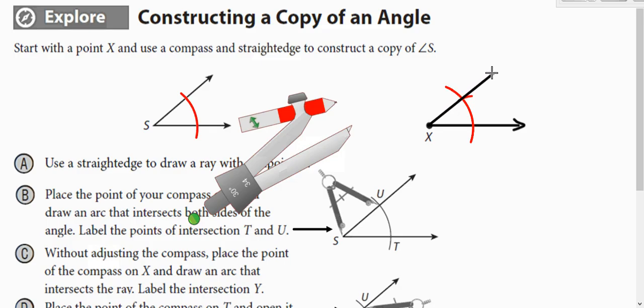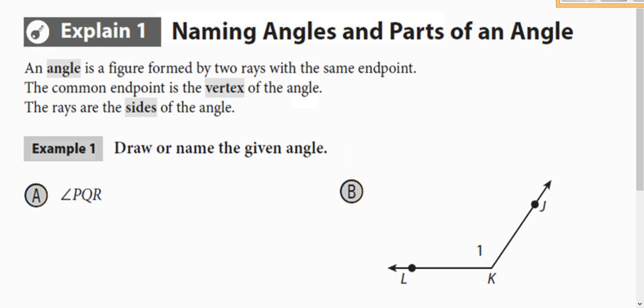Now that little X that we just formed, we just have to go through that point. So from our vertex here, use your straightedge to go through that point, and we copied the angle.